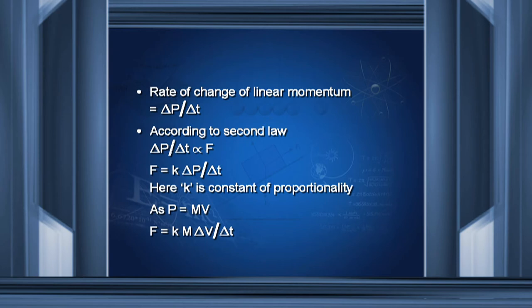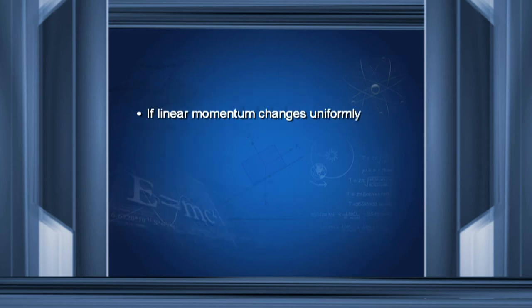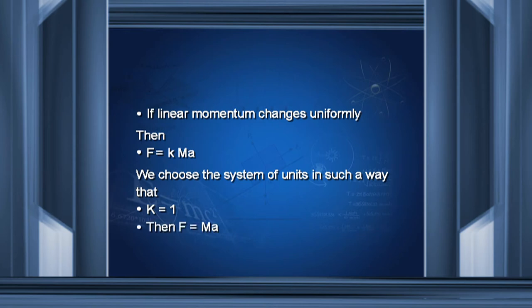Since P equals MV, substituting the value of P we get F equals K M delta V upon delta T. If linear momentum changes uniformly, then delta V upon delta T equals acceleration A. If we choose units such that K equals 1, then F equals M into A.